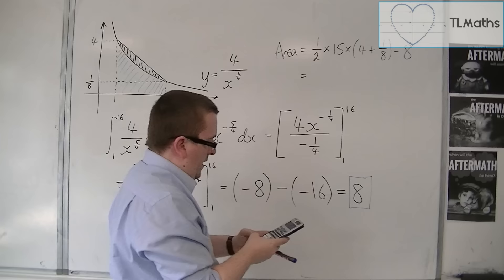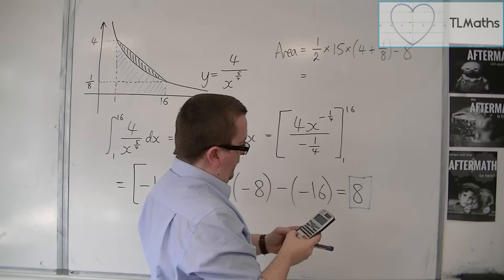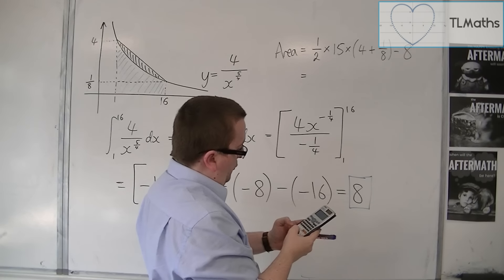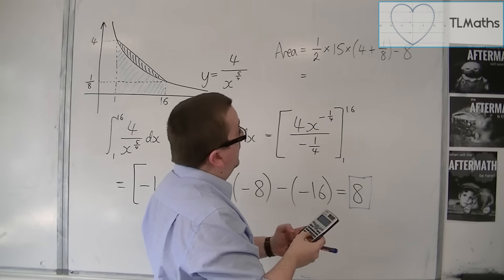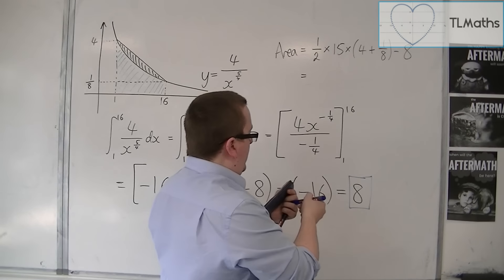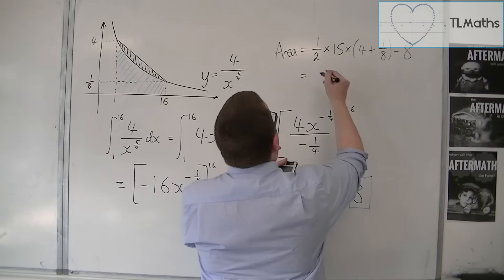So, we have 1 half times 15, times 4 plus 1 eighth, then take away 8.